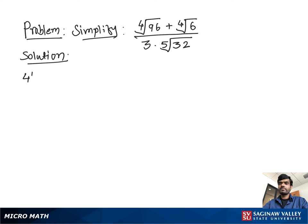Simplify 4th root of 96 plus 4th root of 6 divided by 3 times 5th root of 32. First, we need to divide 96 into two smaller numbers where one of them is a perfect square.